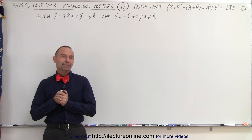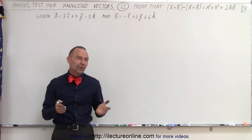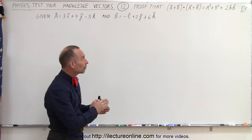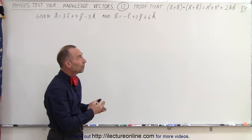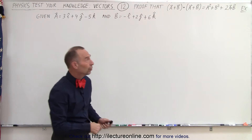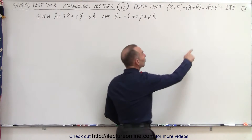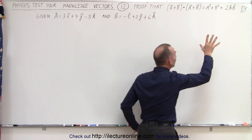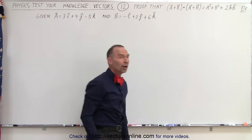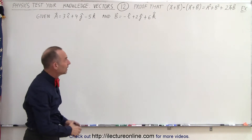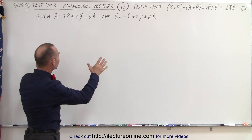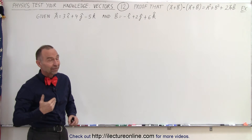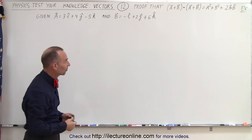Welcome to our lecture online. In the previous video we showed that the dot product of (A plus B) and (A plus B) was equal to the magnitude of A squared plus the magnitude of B squared plus twice the dot product of A and B. And here, with these two vectors that we've used before, we're going to show that that is indeed correct.